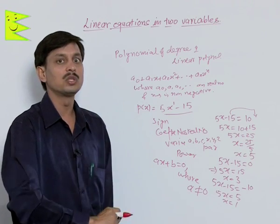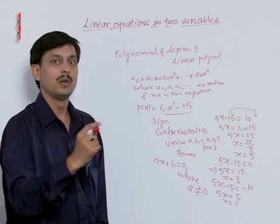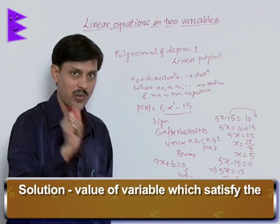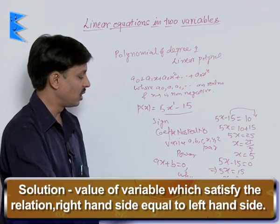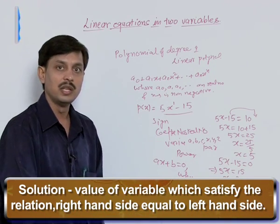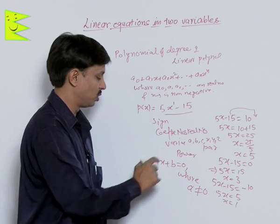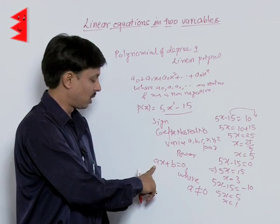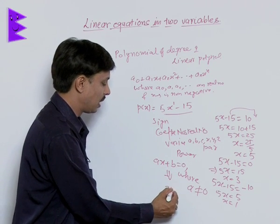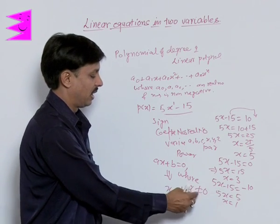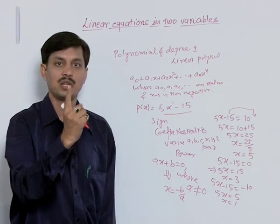It has one variable, it has one solution, that is it has one root, and what is the solution? The value of variable which satisfy the relation so left hand side and right hand side makes equal is known as the linear equation in one variable, whose standard form is Ax plus B is equal to 0, where A is the coefficient of x, B is the constant, and value of x if it is solved will be x equals to minus B upon A, and necessary condition is A is not equal to 0. So this is about linear equation in one variable.